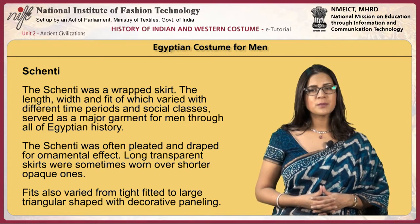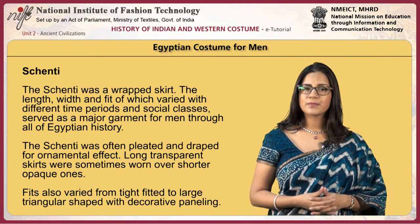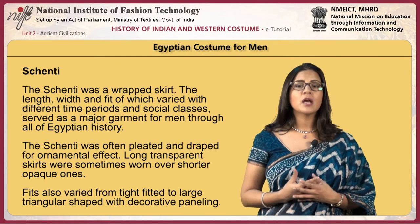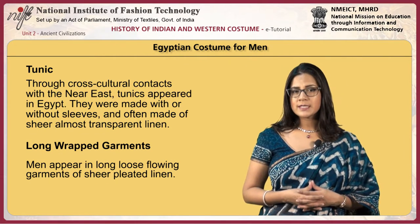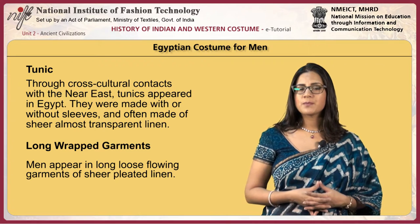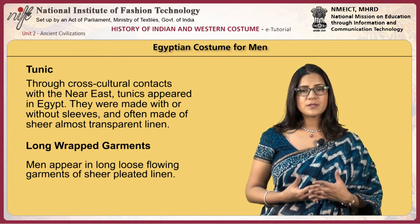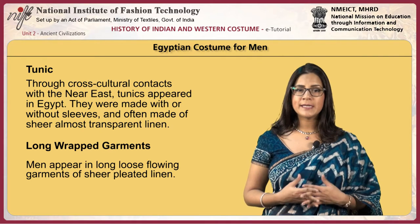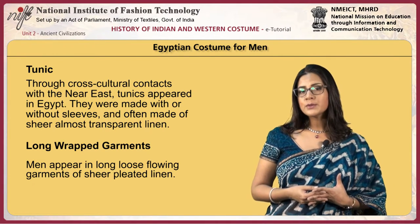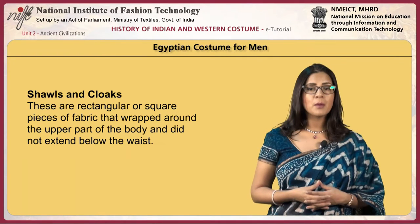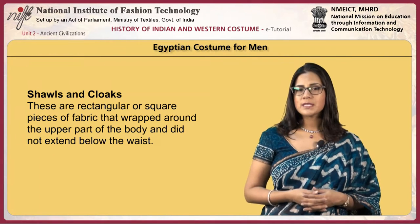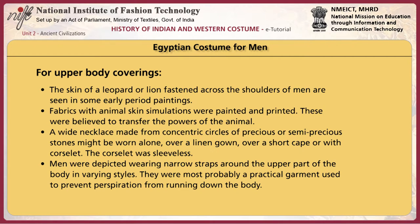Long transparent skirts were sometimes worn over shorter opaque ones. Fits also varied from tight-fitted to large triangular shapes with decorative paneling. Through cross-cultural contacts with the Near East, tunics appeared in Egypt. Tunics were made with or without sleeves and often made of sheer, almost transparent linen. Men appear in long loose flowing garments of sheer pleated linen — rectangular or square pieces of fabric wrapped around the upper part of the body, not extending below the waist. The skin of a leopard or lion fastened around the shoulders of men is seen in some early period paintings.